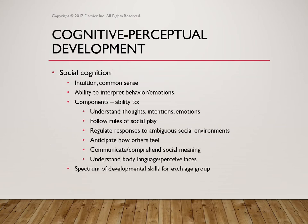We look at social cognition — the intuition and ability to interpret behaviors and emotions. Are these kids able to interpret behavior and emotion? Can they process this? We look at their ability to understand thoughts, follow rules of social play, and regulate responses to different social environments. We look at their perception and how they anticipate how others feel, how they communicate and comprehend in the social environment, understanding body language, perceiving faces, and noting nonverbal cues.